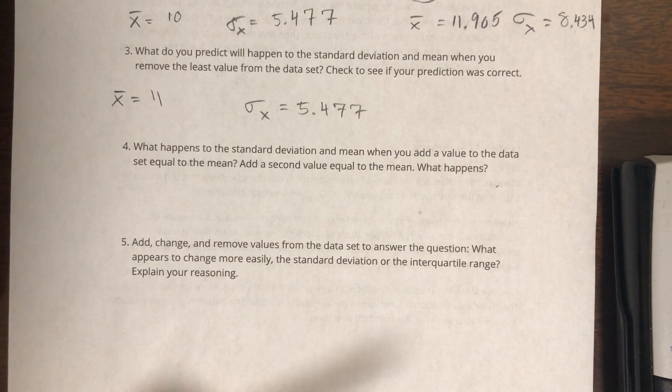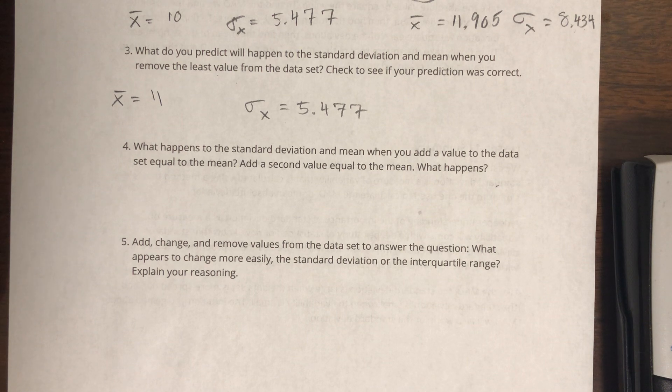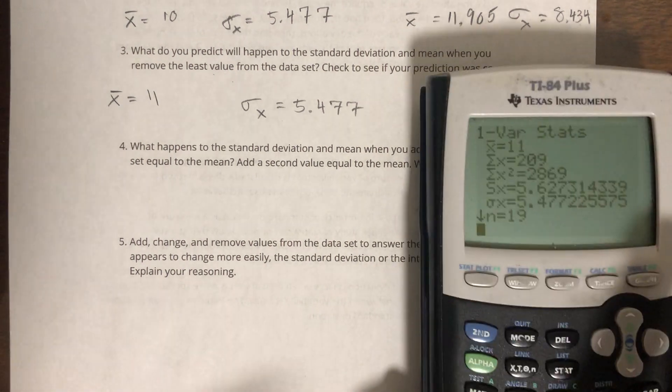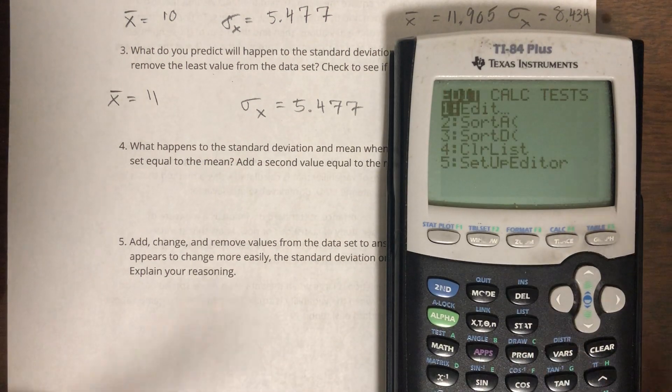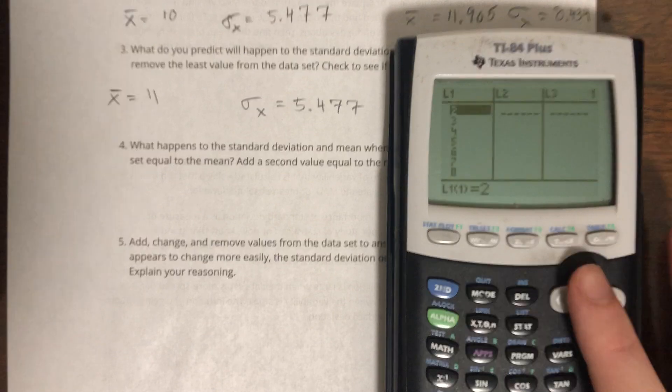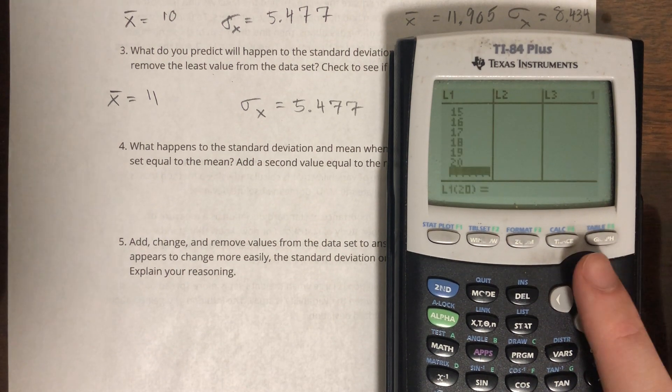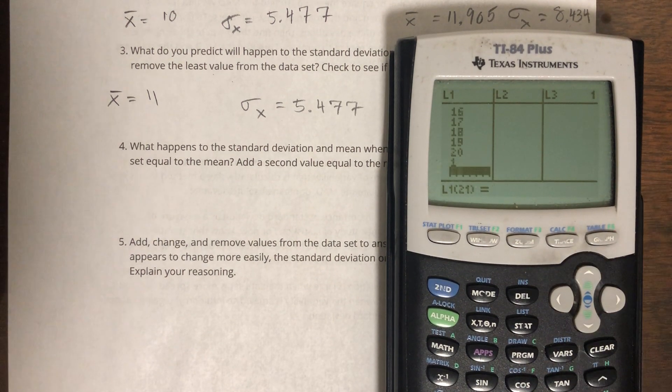Question 4: what happens to the standard deviation and mean when you add a value to the data set equal to the mean? Add a second value equal to the mean. What happens? Okay, so they're not asking for a prediction, so I'm not going to ask that, but think about it. What do you think is going to happen? So I'm going to put that 1 back. It's going to be at the end, it's not a big deal.